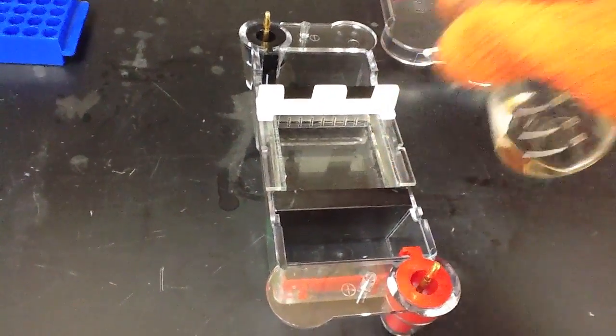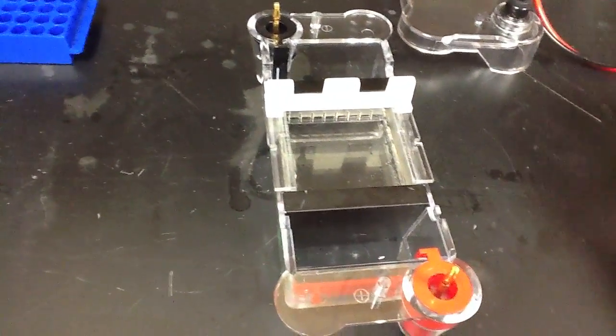Once the agarose solidifies, we cover the gel with TBE buffer and then remove the comb. Removing the comb reveals wells, which are cavities in the agarose into which we can place our DNA samples.